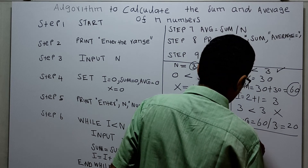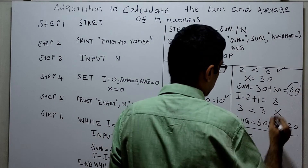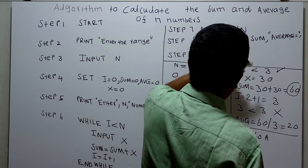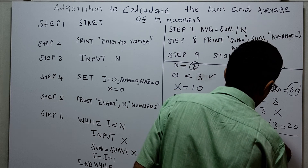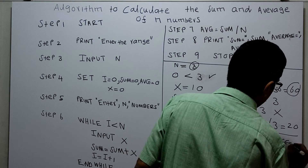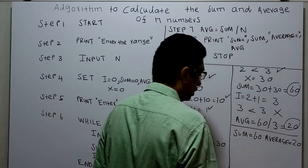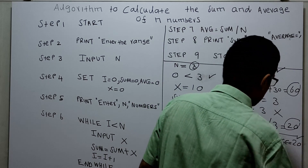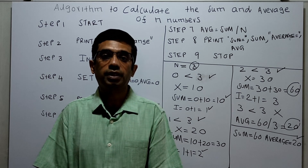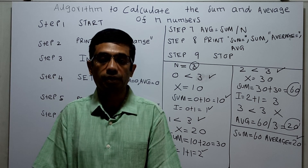The output: sum equal to 60, average equal to 20. So the algorithm is working properly. That's it — thanks for watching this video. Please subscribe to my channel, share, comment, and press the bell button. Thank you.